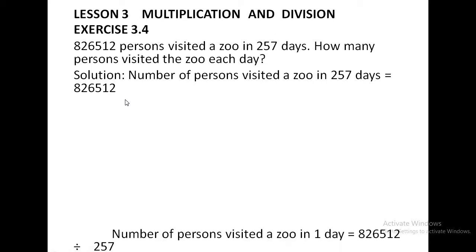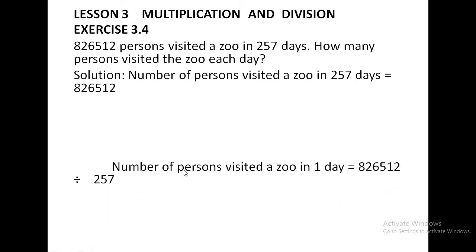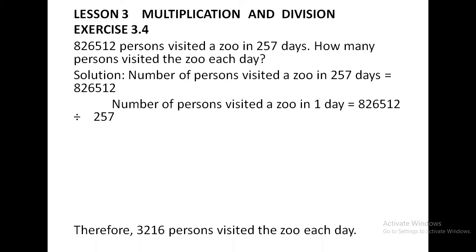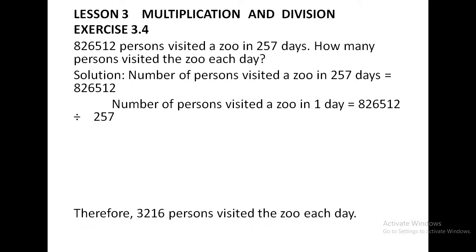Number of persons visited a zoo in one day — which operation do you have to use? Division. So 8,26,512 is divided by 257, because here we have to find per day. Now children, for long division, I have already told you how to divide large numbers. So after dividing, you will find the number of persons visited a zoo each day is equal to 3,216.